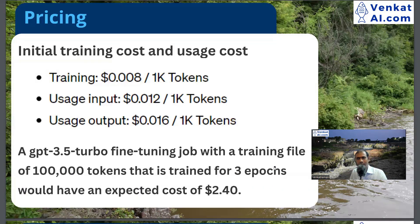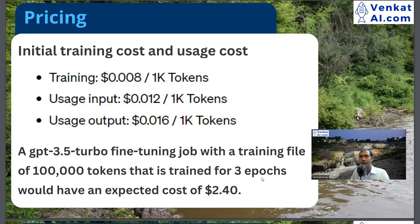Regarding pricing — it is more than 10 times the cost of regular usage. There is a training cost and a usage cost. There is a usage input cost and an output cost. For example, input is 0.012 per 1,000 tokens and the output answer is 0.016 per 1,000 tokens. For GPT-3.5, a training file of 1 lakh tokens with 3 training cycles costs approximately 2.5 dollars.